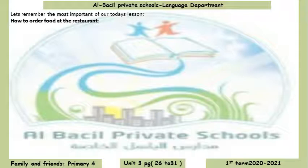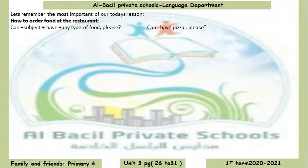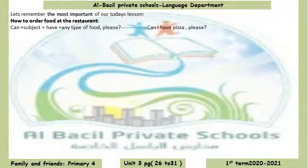Now let's remember the most important points of today's lesson. How to order food at a restaurant. Example number one: Can plus subject plus have plus any type of food you choose, please. Don't forget to add a question mark. Can I have [food], please? So our first example: Can plus subject plus have plus any type of food — comma — please — question mark.